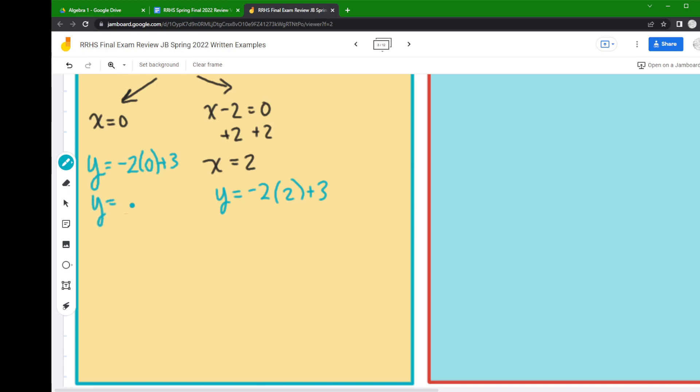So negative 2 times 0 is 0, add 3 to that you get 3. Here negative 2 times 2 is negative 4, and you add 3 to that and you get negative 1. So my two solutions here are (0, 3) and (2, -1).